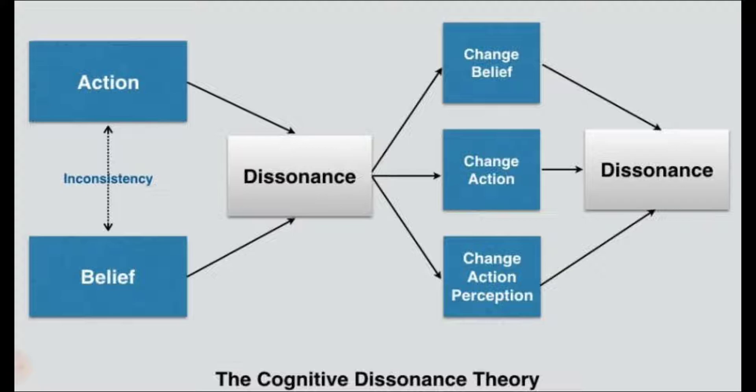For example, if you believe that lying is a bad thing, but someday you lied about something, that would of course create a mental tension in you — because you believe that lying is a bad thing, but you lied. So your belief and your action are contrary to each other, inconsistent with each other. That creates a sort of tension in your mind, and that is called dissonance — cognitive dissonance.